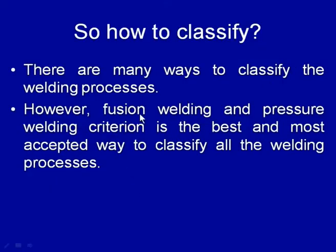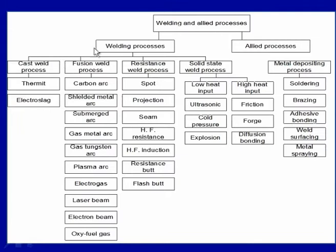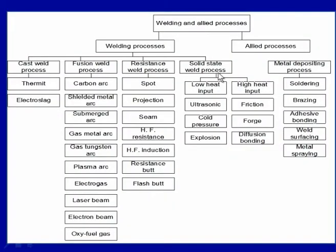There are many criteria and ways through which the classification of welding processes can be done; however, the fusion welding and pressure welding criteria is the best and most accepted way. The last grouping indicates welding processes and allied processes: welding processes are grouped under four categories — cast weld processes, fusion weld processes, resistance weld processes, and solid state weld processes.